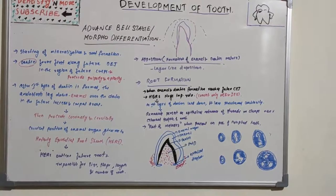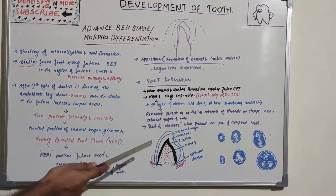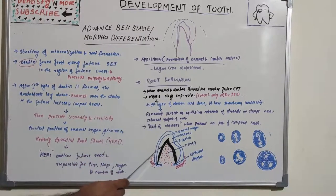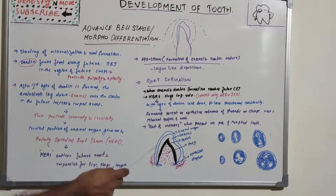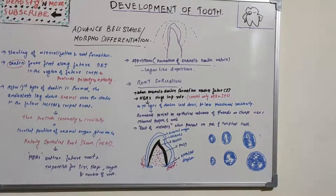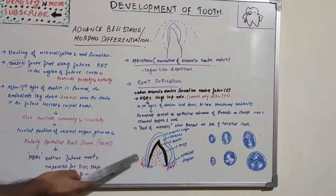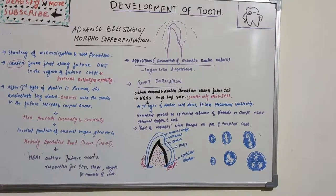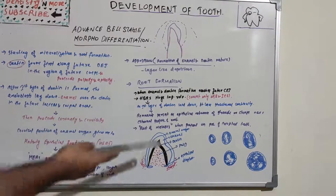Enamel formation then proceeds coronally and cervically from the DEJ toward the surface. Dentine formation moves toward the apical and pulpal areas. The cervical portion of the enamel organ gives rise to Hertwig's epithelial root sheath (HERS), which outlines the future root and is responsible for determining its size, shape, length, and number.